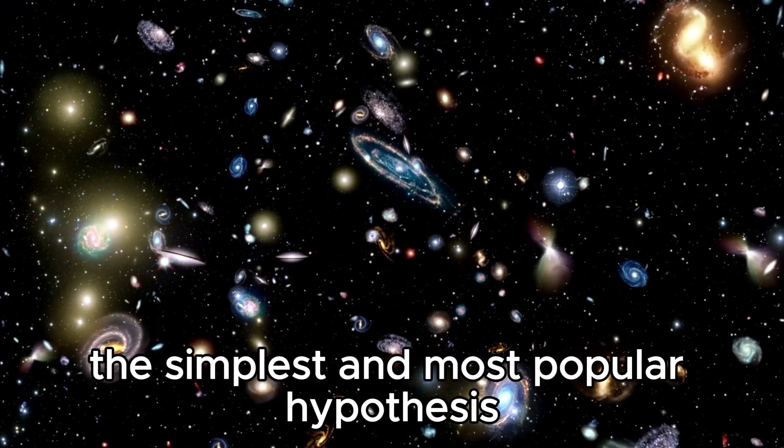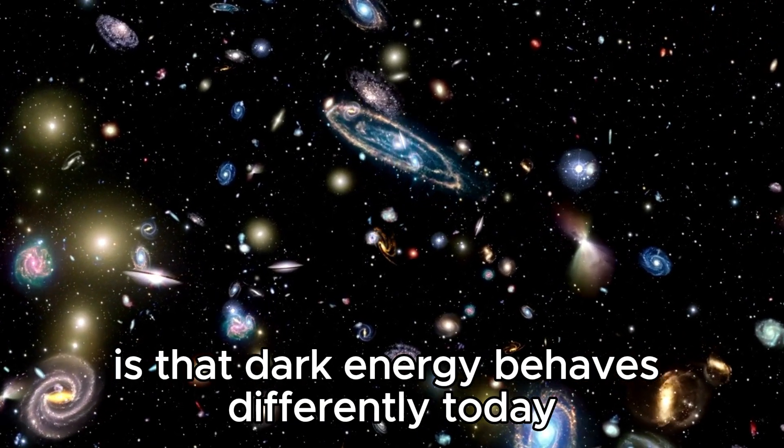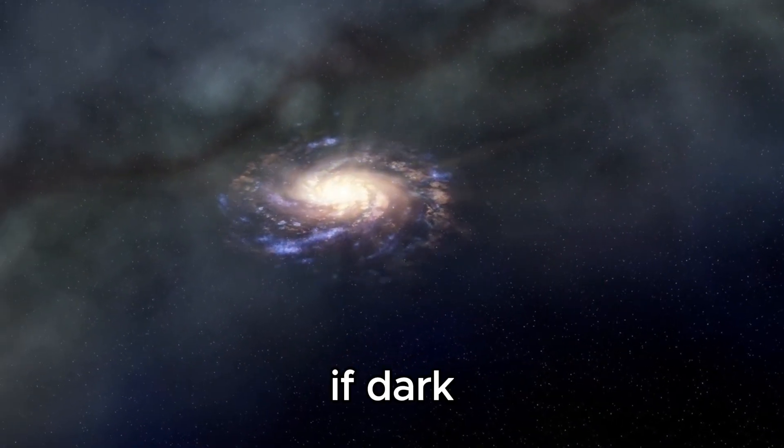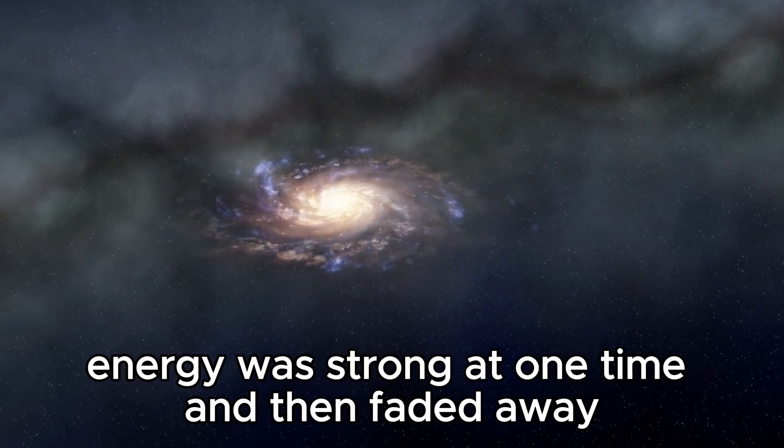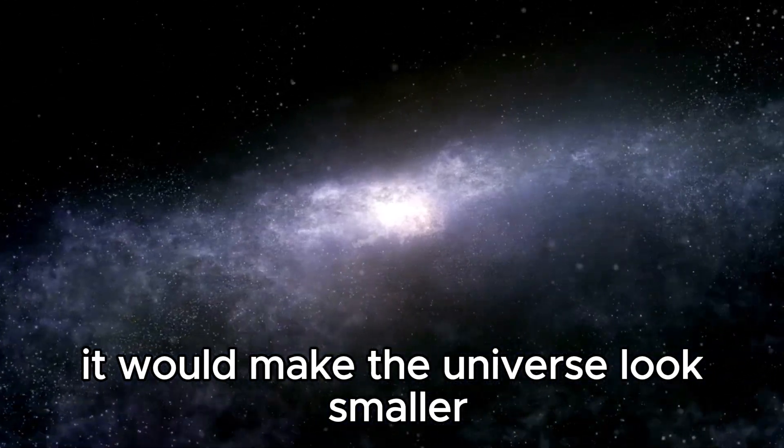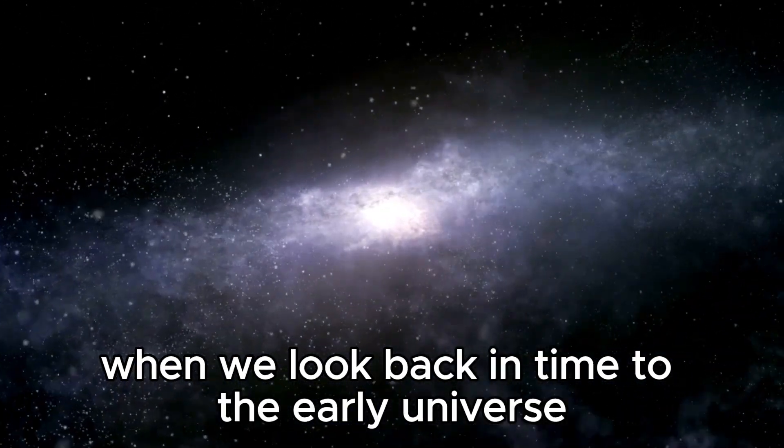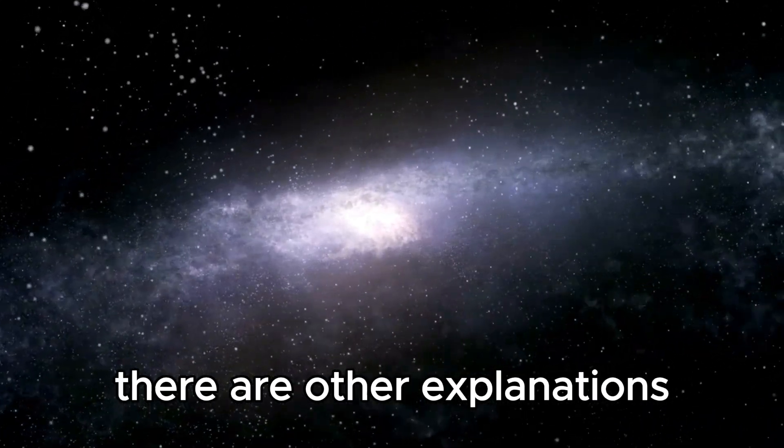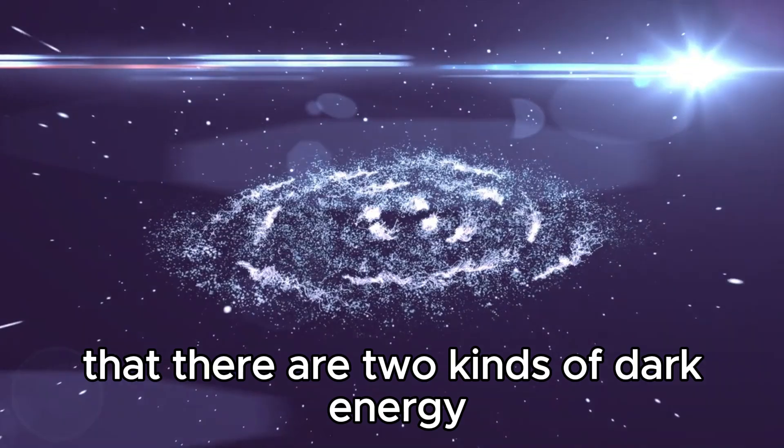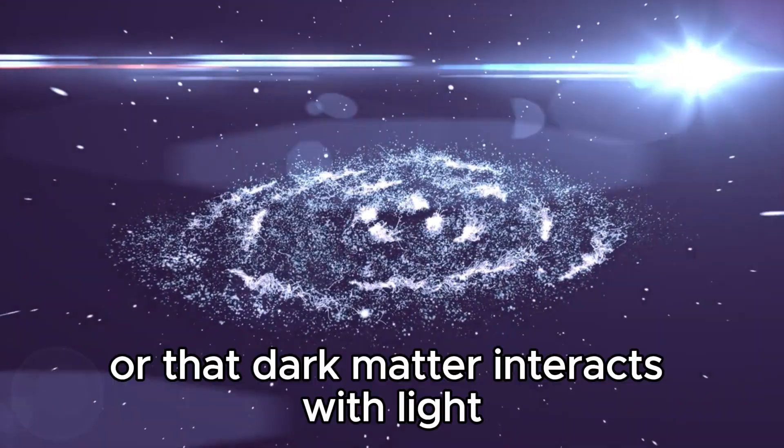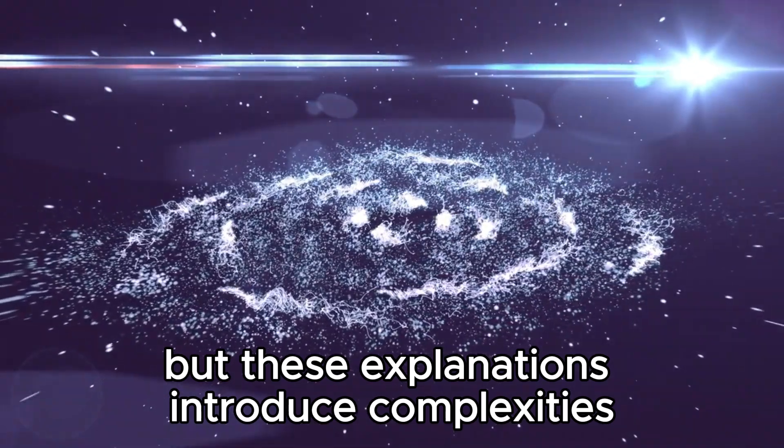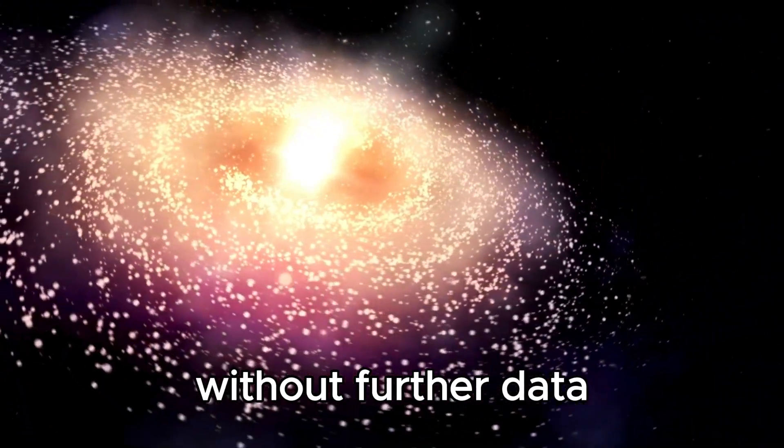The simplest and most popular hypothesis is that dark energy behaves differently today than it did in the early universe. If dark energy was strong at one time and then faded away, it would make the universe look smaller when we look back in time to the early universe, making the expansion rate appear faster today. There are other explanations, such as the possibility that there are two kinds of dark energy, or that dark matter interacts with light, but these explanations introduce complexities that cosmologists are wary of without further data.